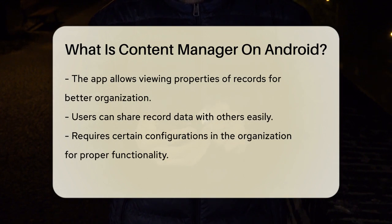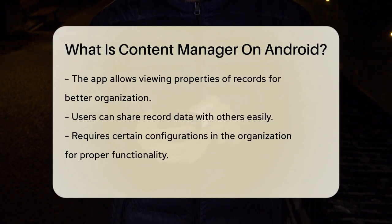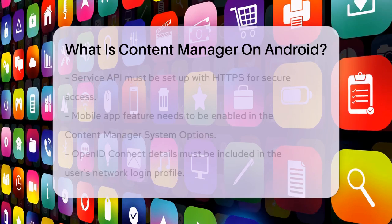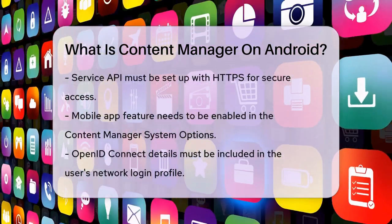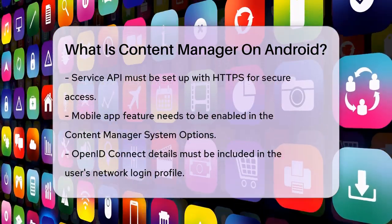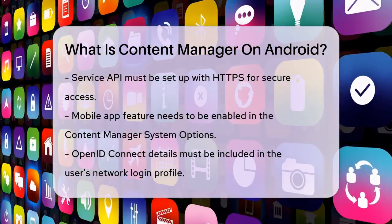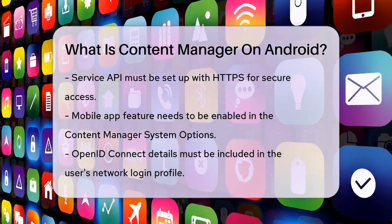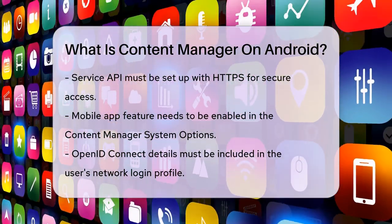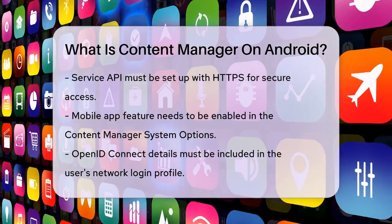To use the app, your organization needs to have a few configurations in place. The service API must be configured with HTTPS, and the mobile app feature needs to be enabled in the Content Manager system options. Users also need to have their OpenID Connect details included in their network login profile.